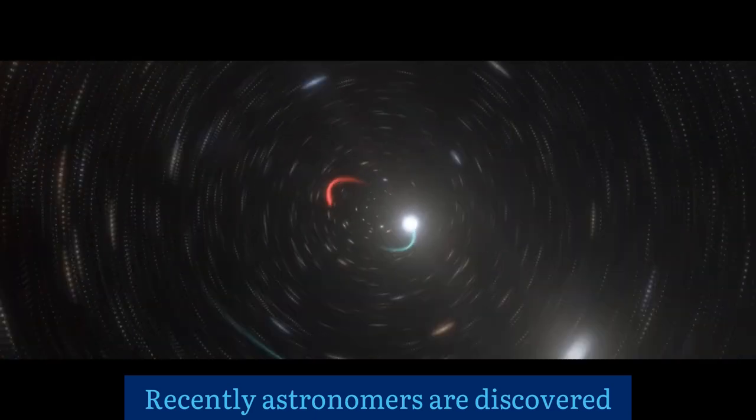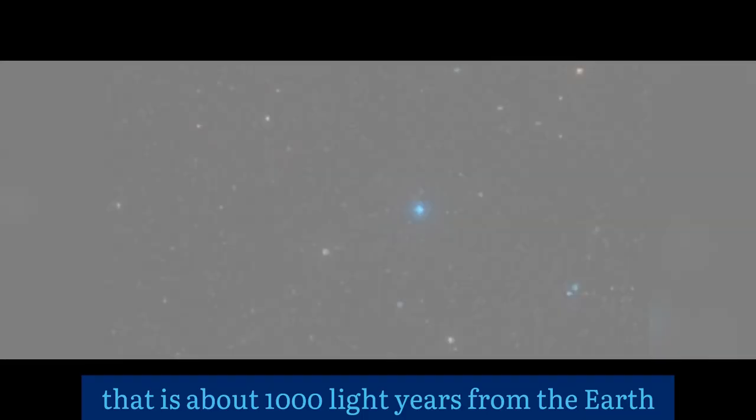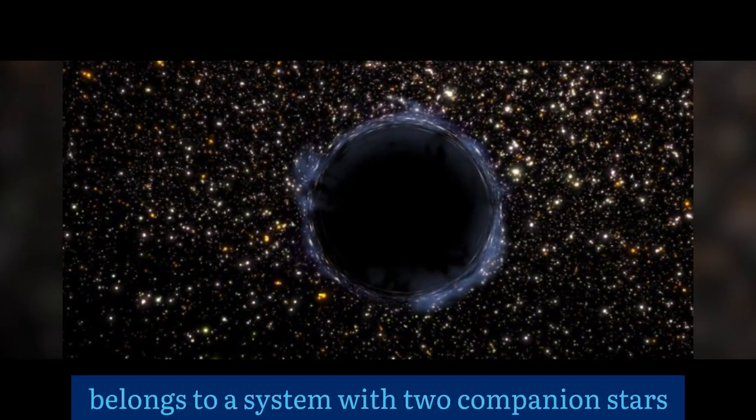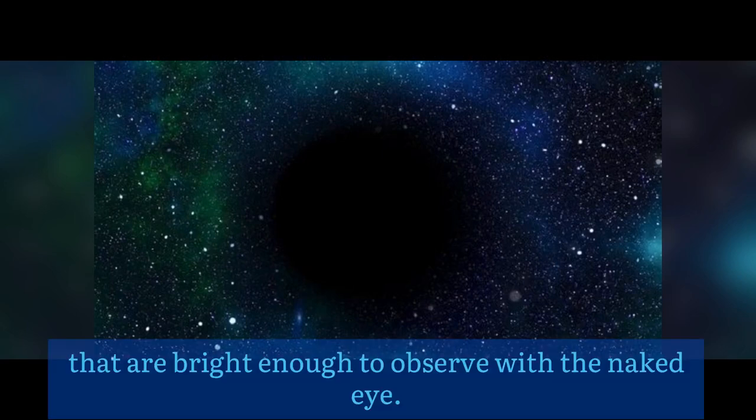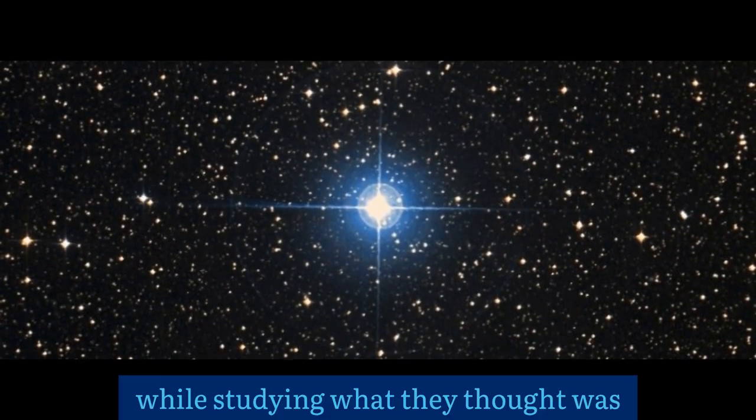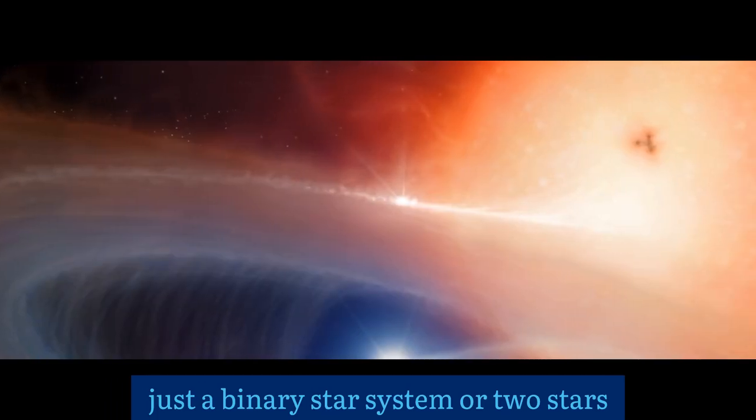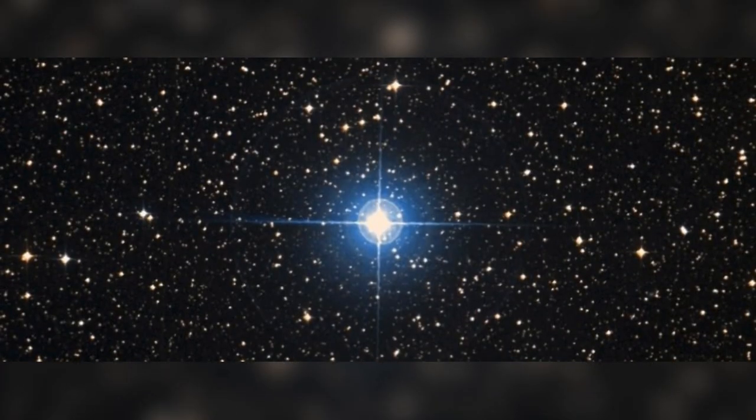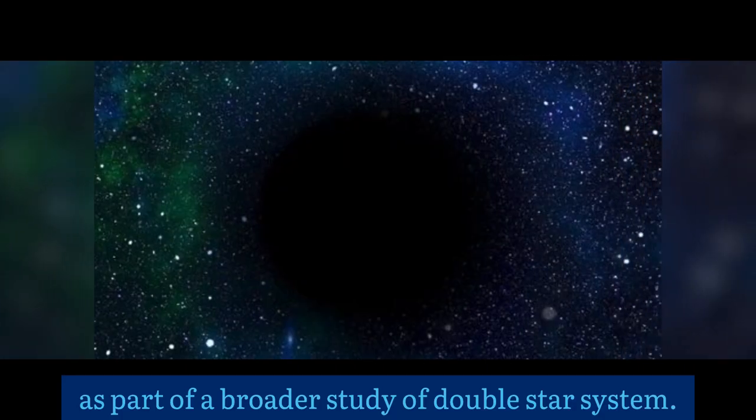Recently, astronomers discovered a black hole which is nearest to the Earth, that is about a thousand light years from the Earth. A constellation of Telescopium belongs to Earth's system with two companion stars that are bright enough to observe with the naked eye. Astronomers discovered this black hole while studying what they thought was just a binary star system, or two stars that orbit a common center of mass. That is the binary known as HR6819, as part of a broader study of double star systems.